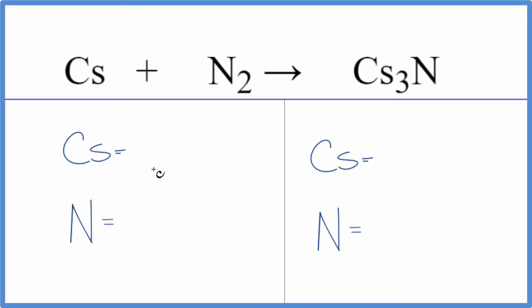In this video we'll balance the equation for Cs plus N2 yield Cs3N. So let's count the atoms up and balance the equation.